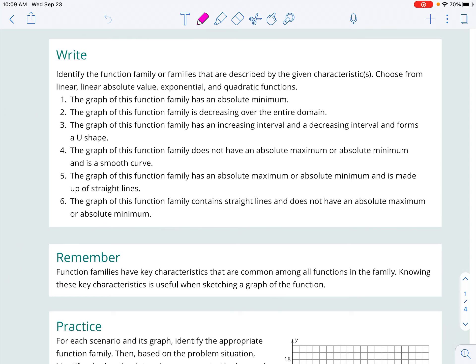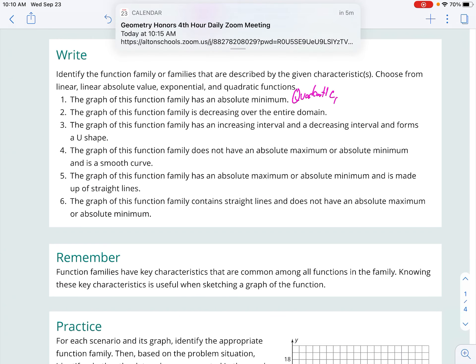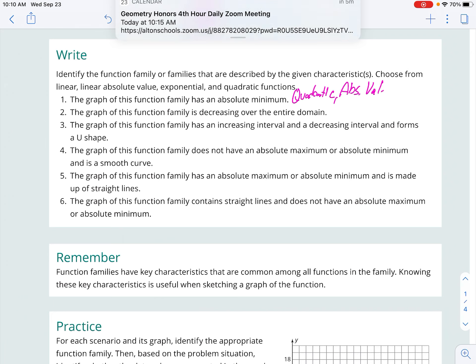Number one, the graph of this function family has a minimum. So the only ones that have a minimum is where there is a turn, say from like an increasing to decreasing, and in that regard, that's going to be the quadratic and the absolute value. Those are the only two options.